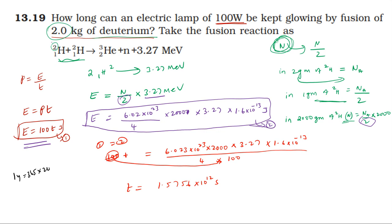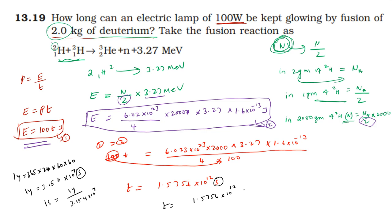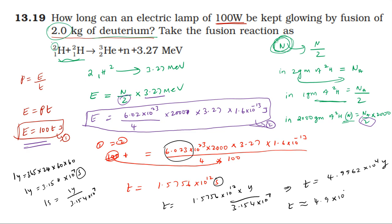Converting time: 1 year equals 24 hours × 60 minutes × 60 seconds, which gives 3.154 into 10 power 7 seconds. Therefore time in years equals total energy divided by (power × 3.154×10⁷). The final answer is approximately 4.99 into 10 power 4 years, or about 4.9×10⁴ years.